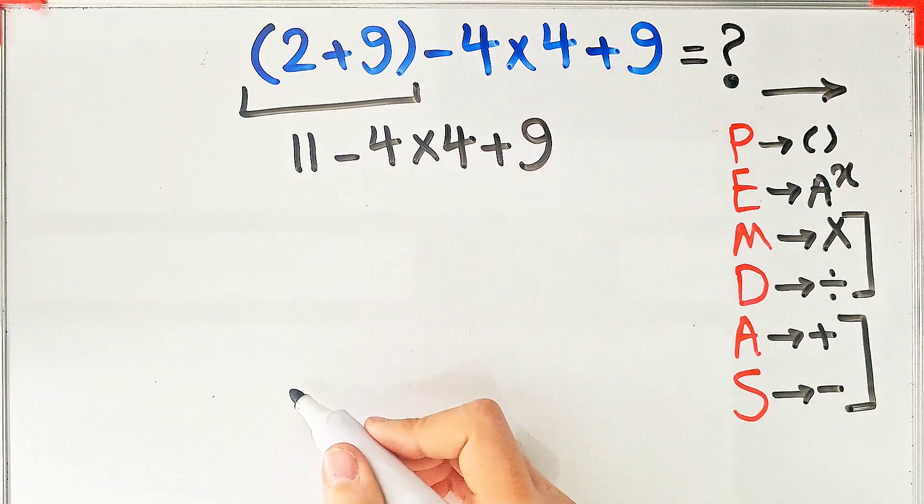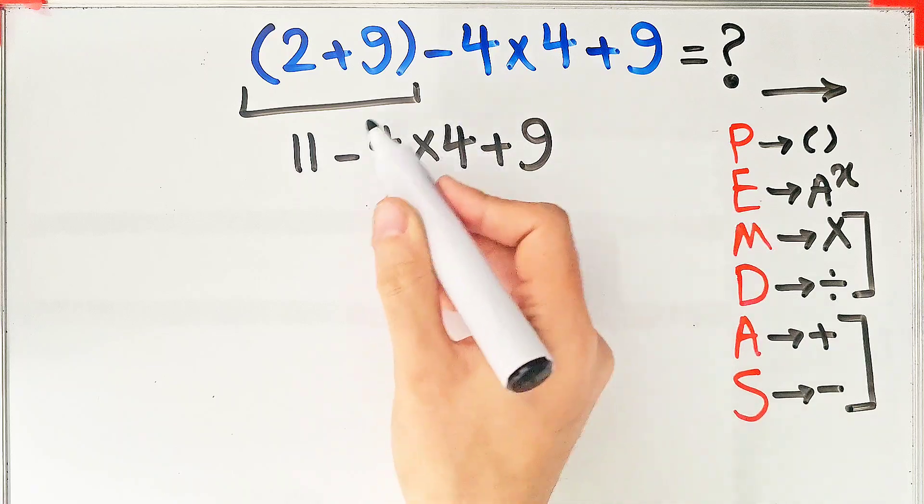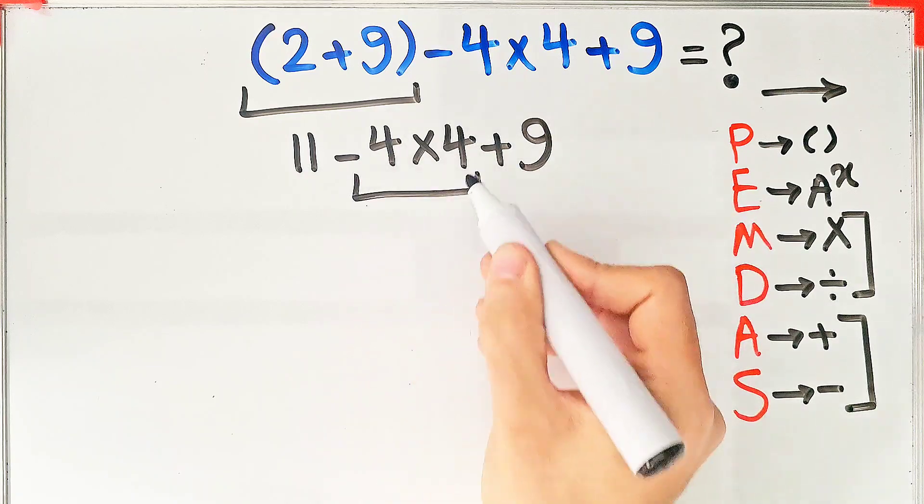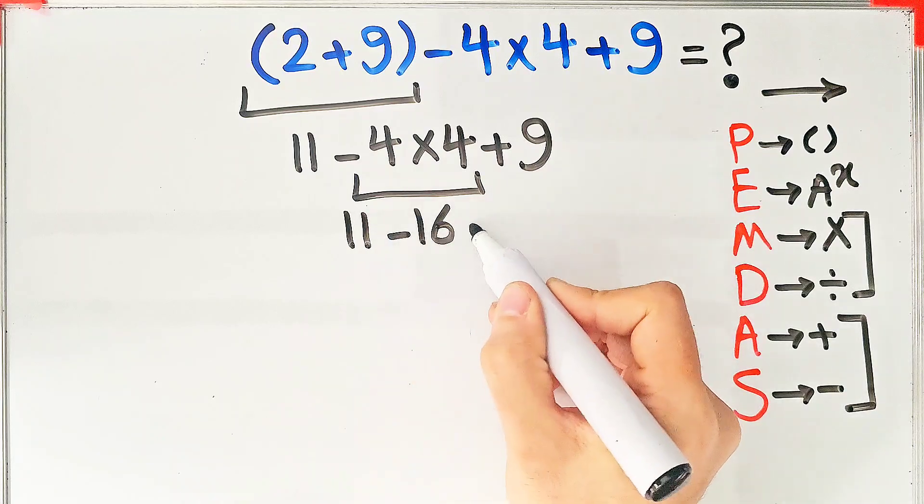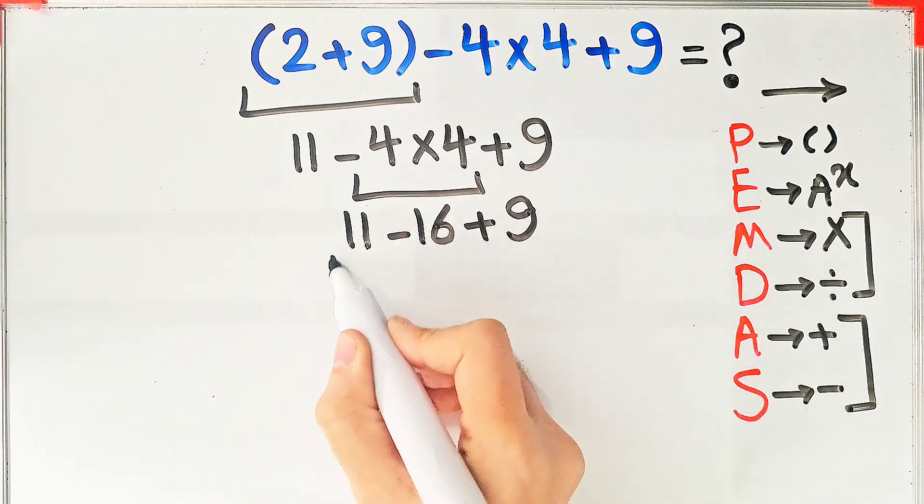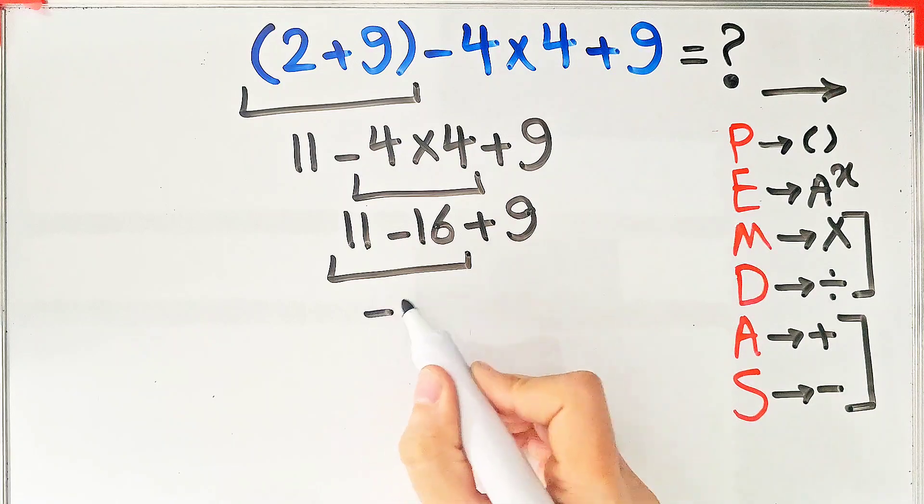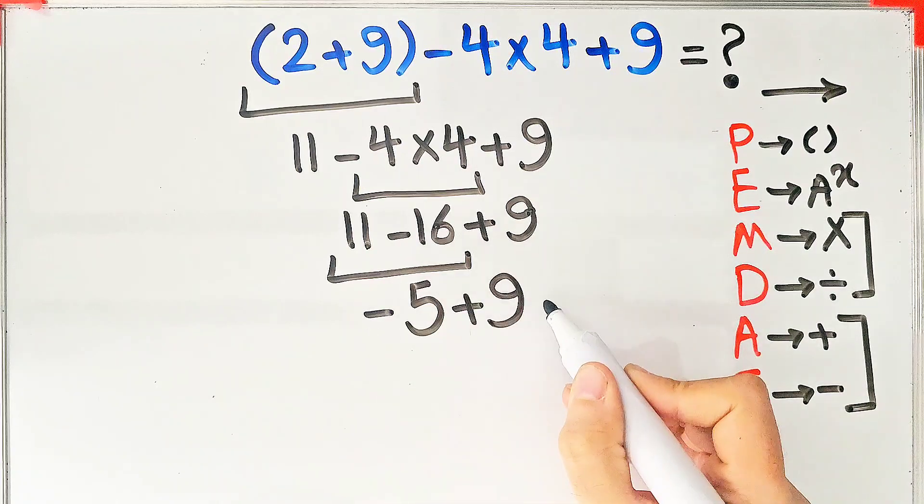We have subtraction, multiplication, and addition. First we simplify this multiplication: negative 4 times 4 equals negative 16. 11 minus 16 then plus 9. 11 minus 16 equals negative 5, and negative 5 plus 9 equals 4.